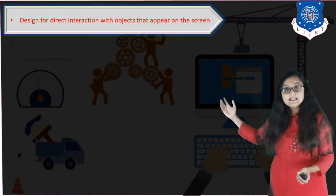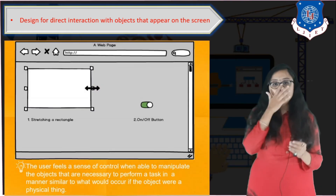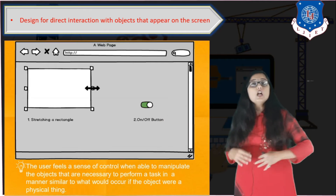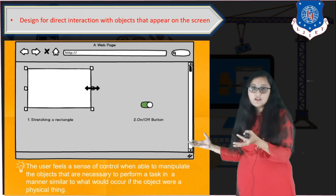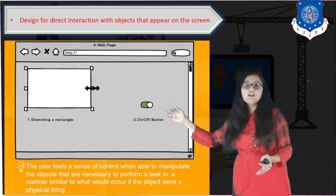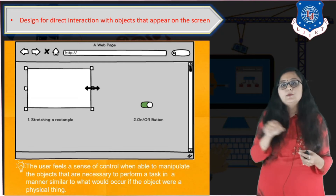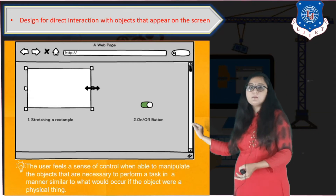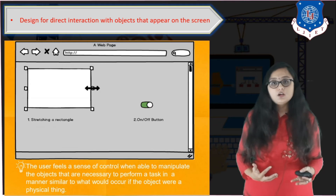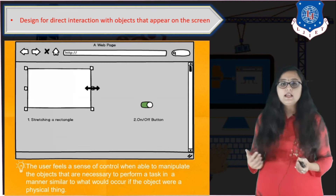The next point is to design for direct interaction with objects that appear on the screen. For example, there may be a toggle object and a rectangle object. The user interface should allow users to directly interact with them — for example, clicking a rectangle's edge to stretch it, or clicking a toggle button to toggle it. Allowing direct manipulation of user interface objects makes the interface easier to use.